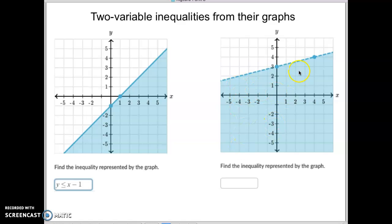This one, you'll notice, is shaded below the line again, so it's going to be another less than. And because it's a dashed line this time, there will not be an equal sign. So no equal sign this time.